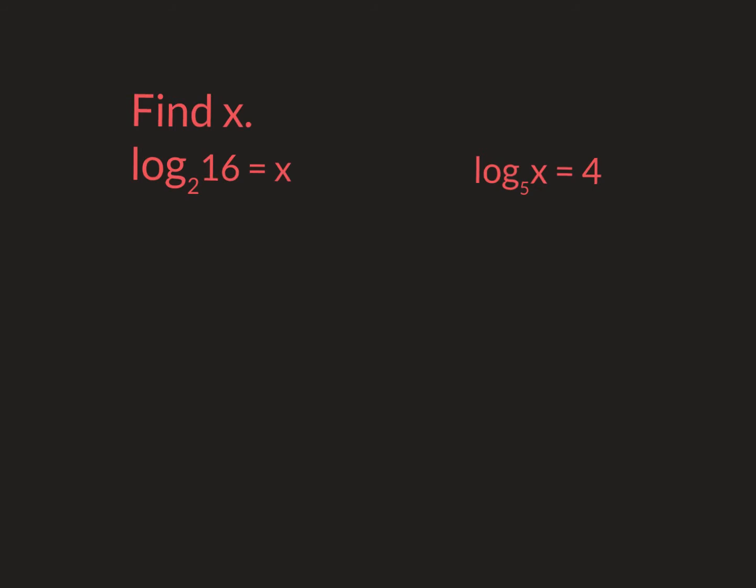This first one you would rewrite as an exponential function. So I'm going to put 2 to the x power equals 16. That's how you would rewrite that. So you can probably figure that out in your head: 2 to what power is 16? The fourth power. If you can't do it that way, I'll show you another way in class tomorrow.